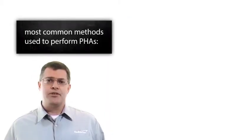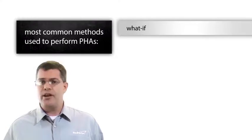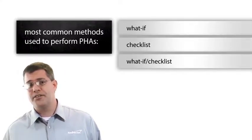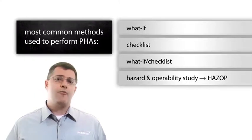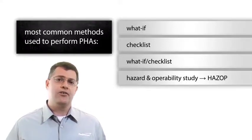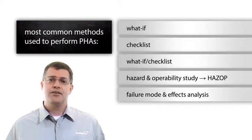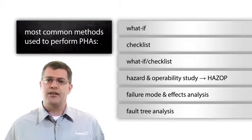The most common methods used to perform PHAs are what-if, checklist, what-if checklist, hazard and operability study which is commonly called HAZOP, failure mode and effects analysis, and fault tree analysis.